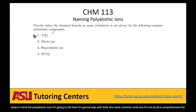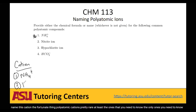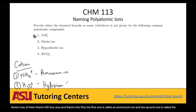So this first one — it's positively charged, it's a cation. Polyatomic cations are pretty rare, at least the ones you need to know. There are only two: NH4+ and H3O+. The first one is called the ammonium ion, and the second one is called the hydronium ion. These are pretty much the only polyatomic cations you need to know — ammonium and hydronium. So this one up here is the ammonium.